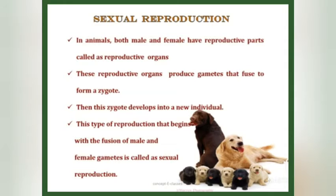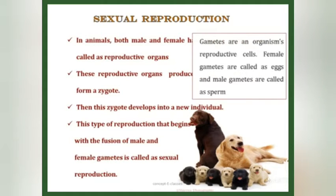Now let's study sexual reproduction. Just as plants that reproduce sexually have male and female reproductive parts, animals also have reproductive organs. These reproductive organs produce gametes that fuse to form a zygote. Gametes are an organism's reproductive cells. Female gametes are called eggs and male gametes are called sperm. When male and female gametes fuse, they form a zygote, which then develops into a new individual.